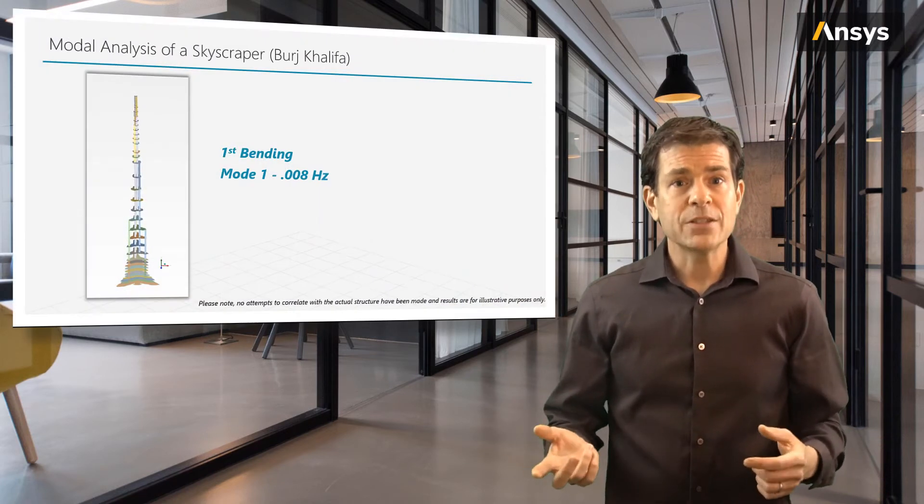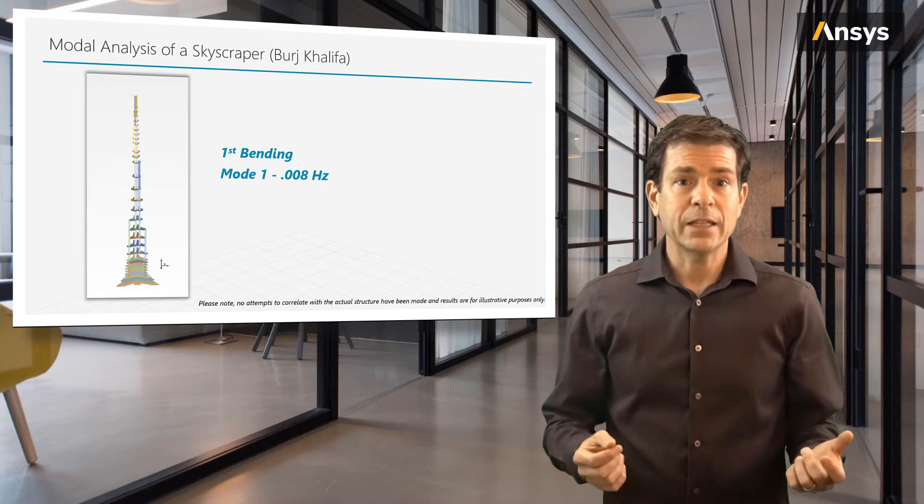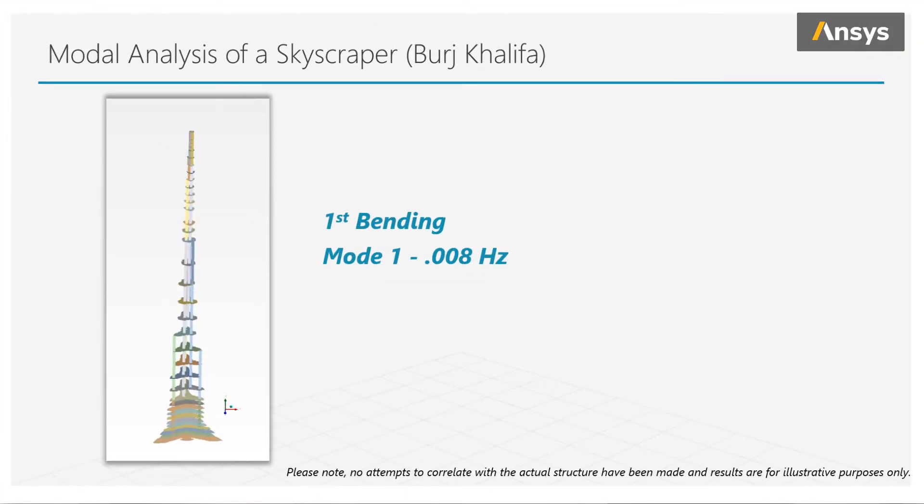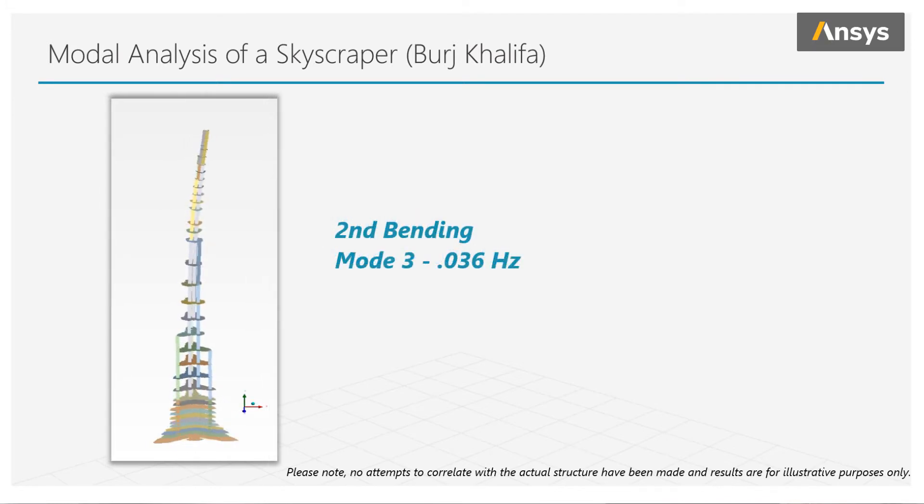Now mode number one is the first bending mode, and if you look at its deformed shape or eigenvector, we see it behaves very much like a cantilever beam or even our tuning fork. Now recall that we have just as many modes as degrees of freedom, and this model has thousands of degrees of freedom. But let's just look at a few other shapes. Mode number three is the second bending mode, and notice it looks very similar to mode number one at the tip. But if you look closely, you will notice the middle of the building is moving in the opposite direction to the tip.